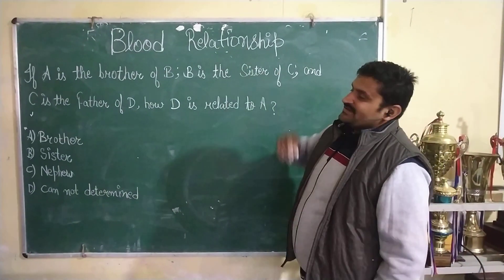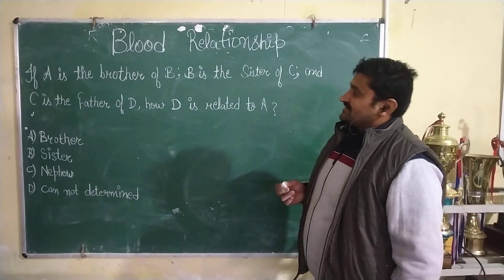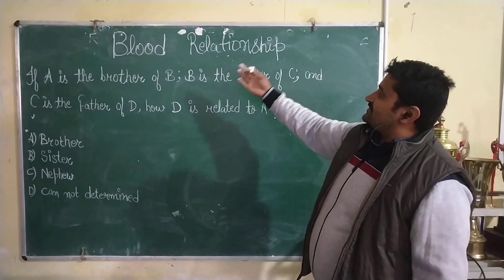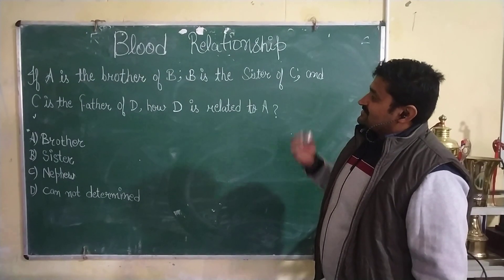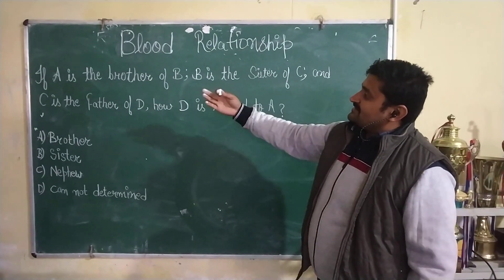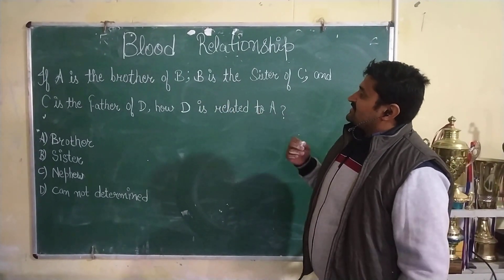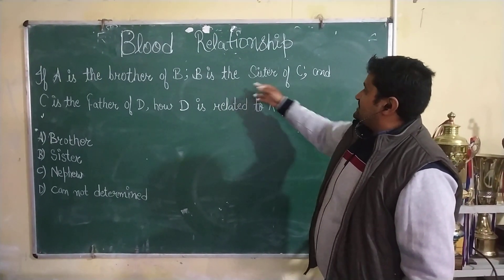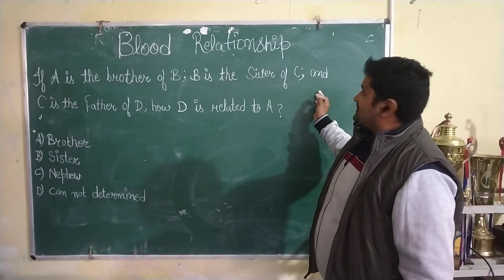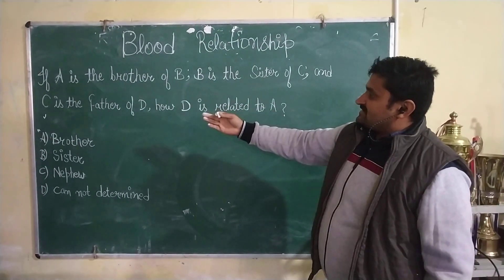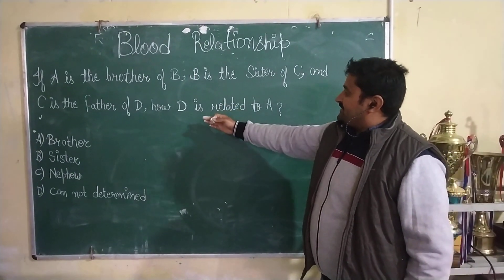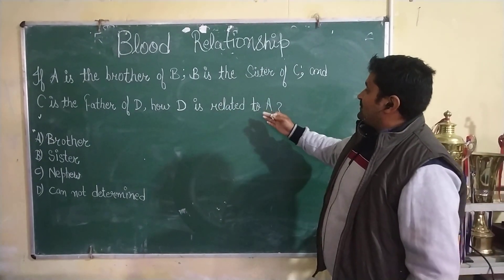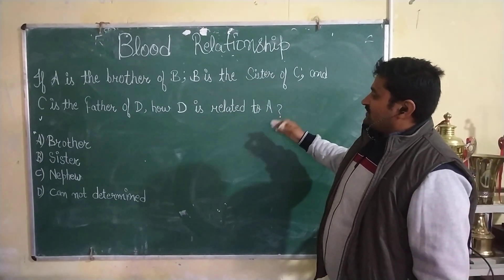Good morning friends, today we are going to discuss another question on blood relationship. So our question is: if A is the brother of B, B is the sister of C, and C is the father of D, how is D related to A?